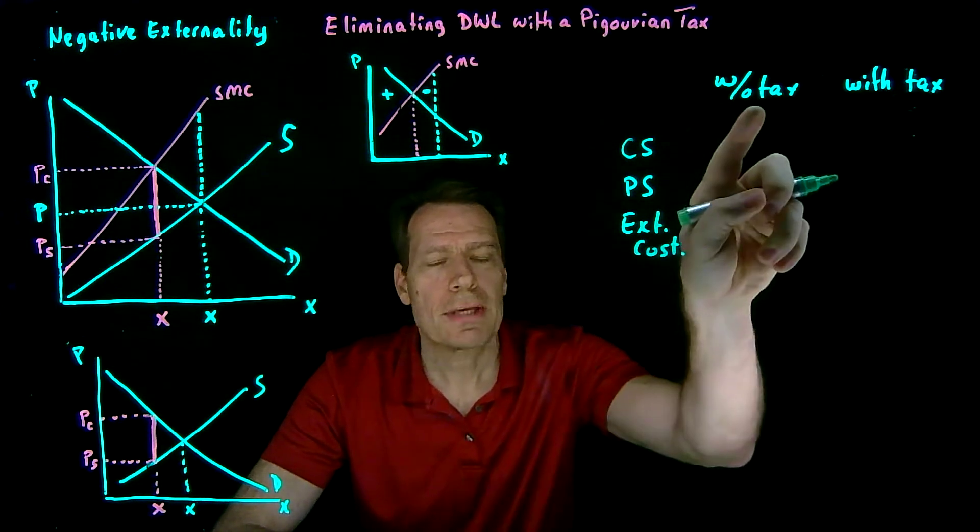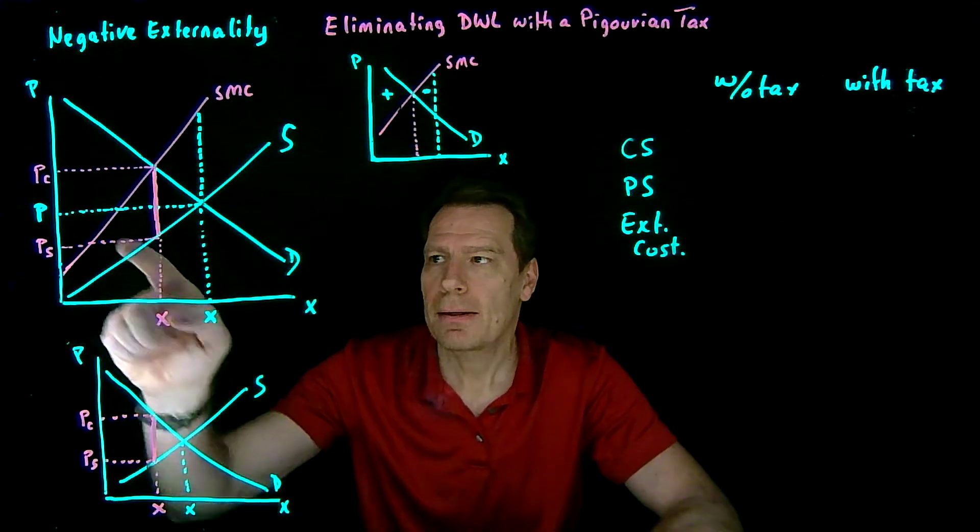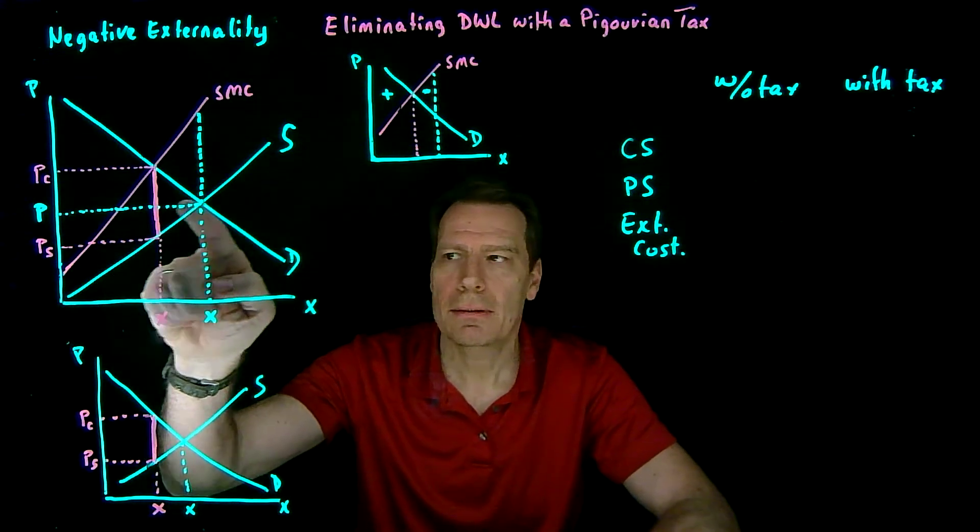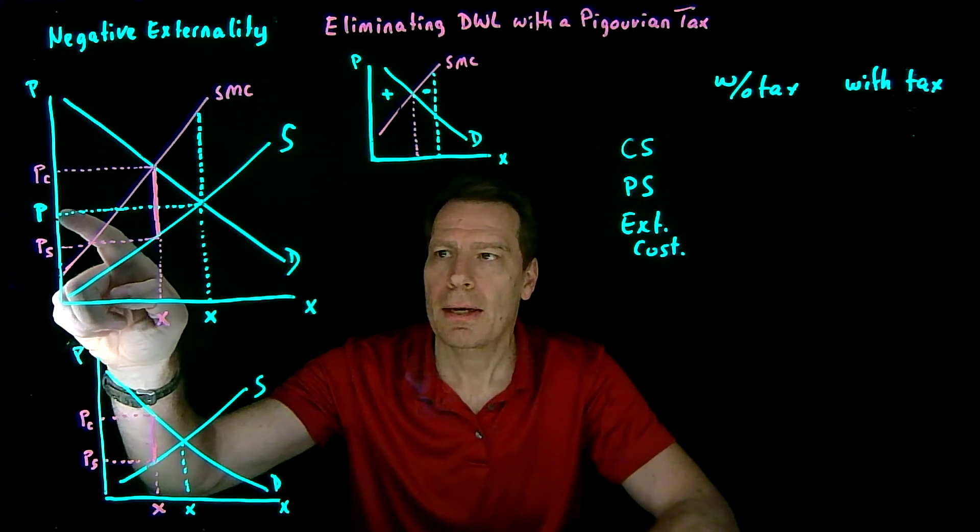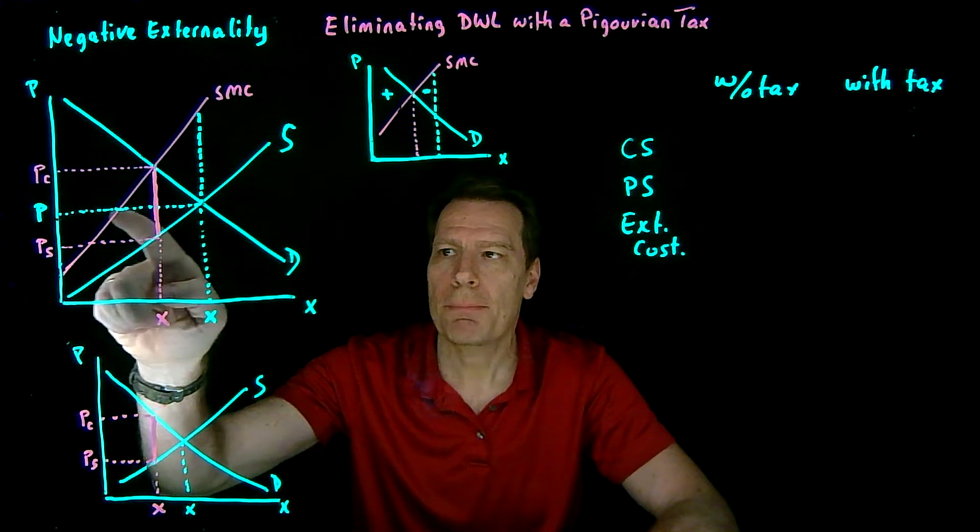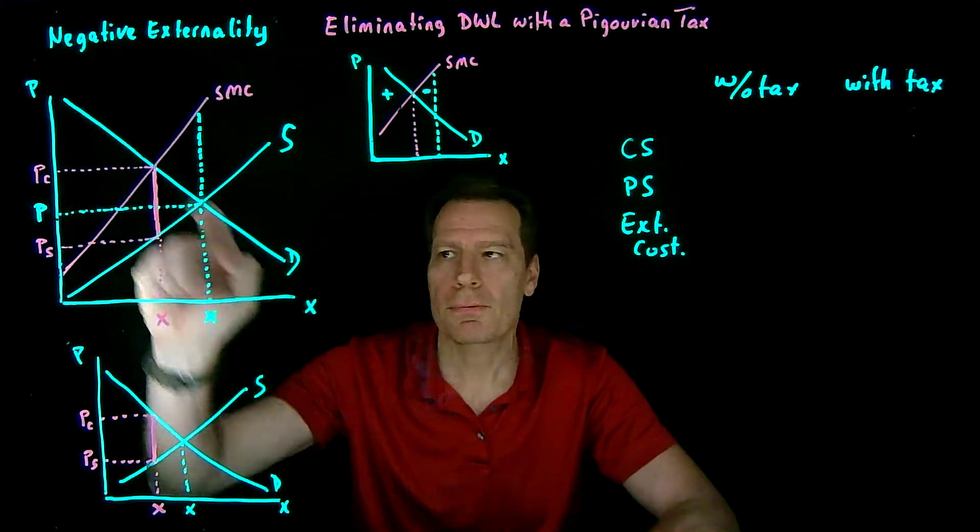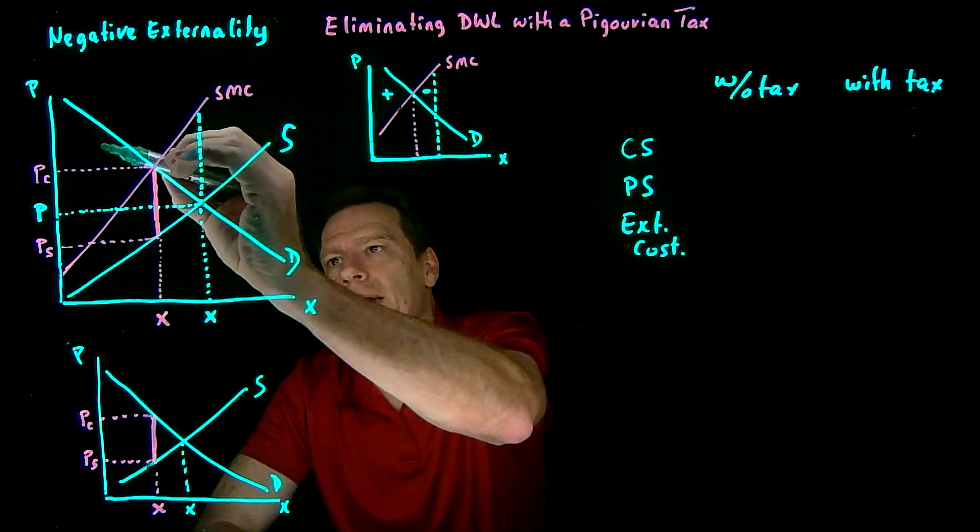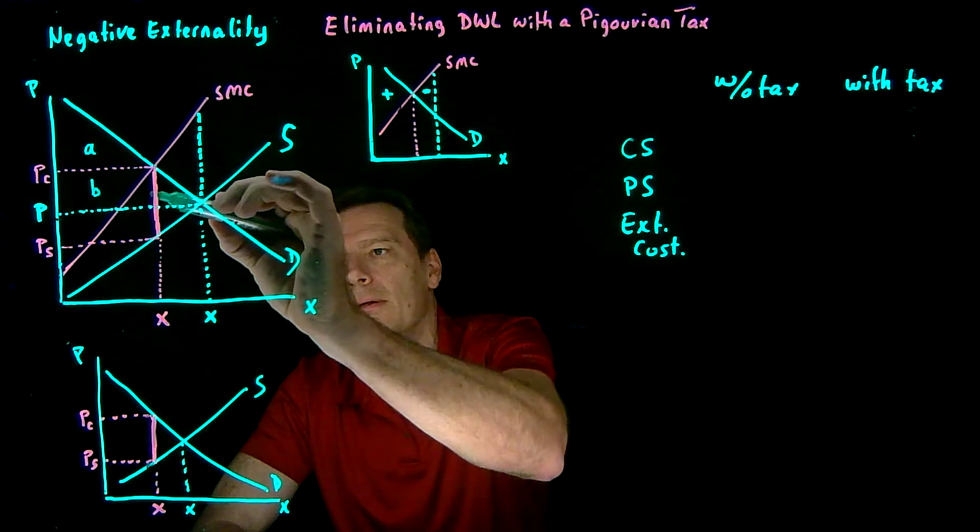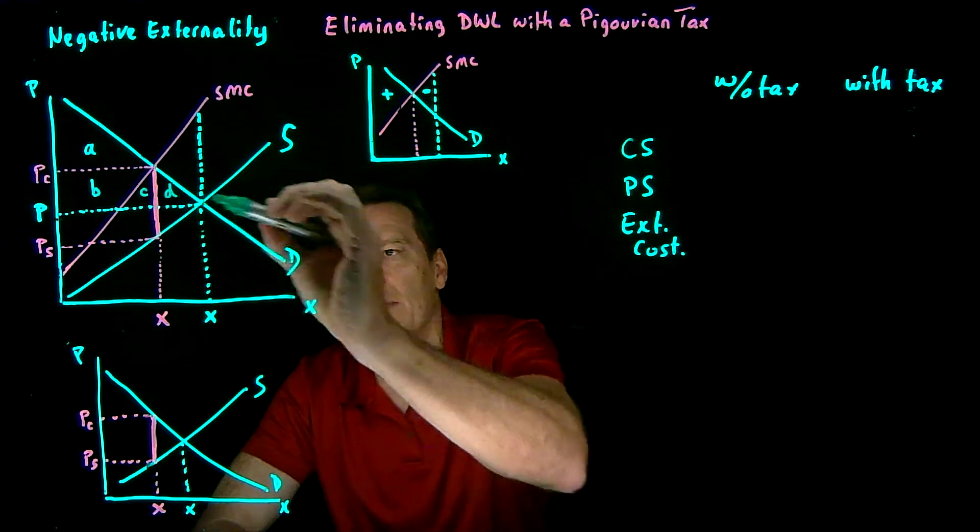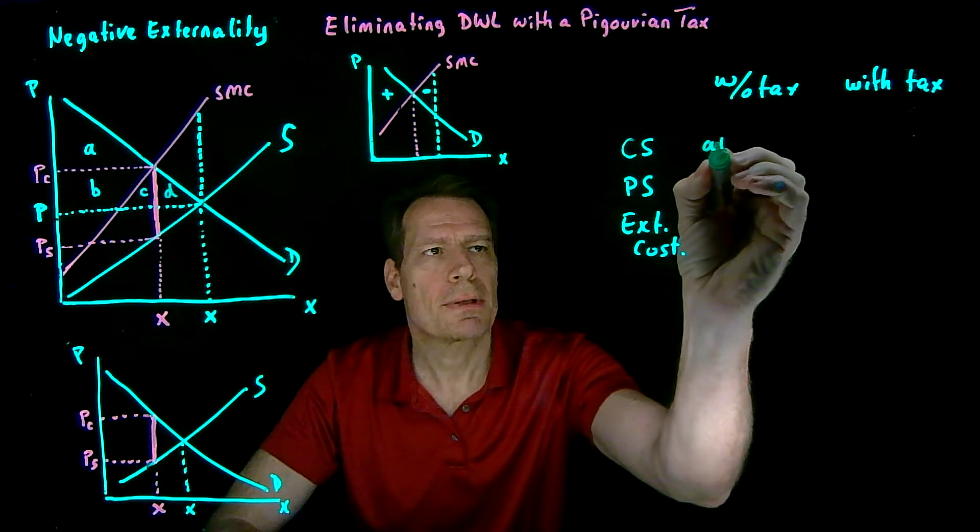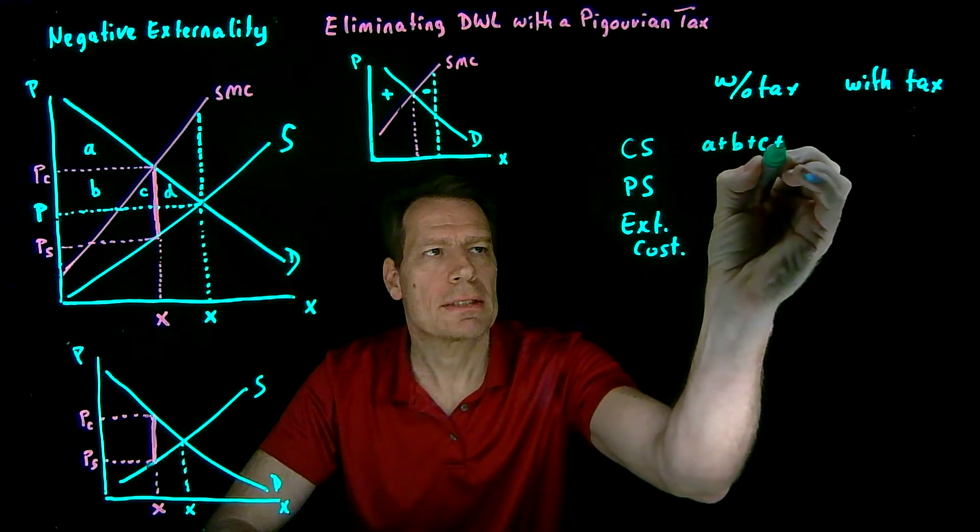So without the tax, consumers pay the equilibrium price, the green price, and they get a surplus of everything above that price up to the demand curve. So that would be area A, B, C, and D. A plus B plus C plus D.